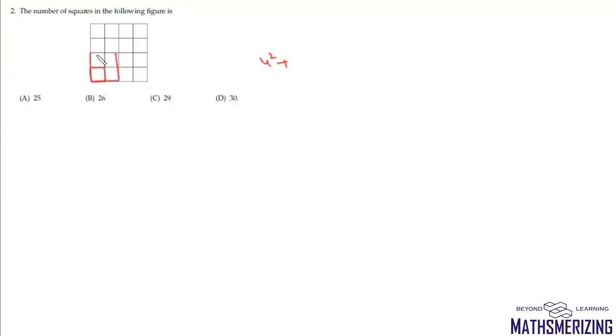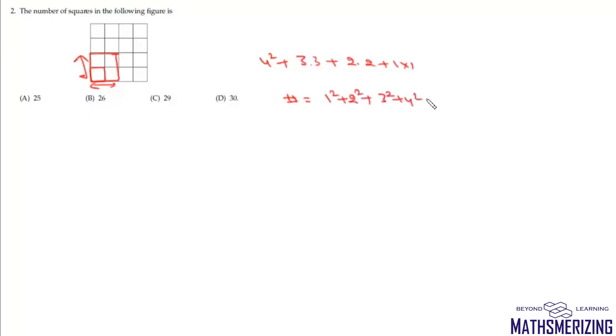Question 2 asks for the number of squares in a 4×4 grid figure. Using the method for counting squares on a chessboard: 1×1 squares = 4² = 16, 2×2 squares require 2 consecutive horizontally and vertically = 3×3 = 9, 3×3 gives 2×2 = 4, and 4×4 gives 1. Total = 1² + 2² + 3² + 4² = n(n+1)(2n+1)/6 = 30. That's option D.